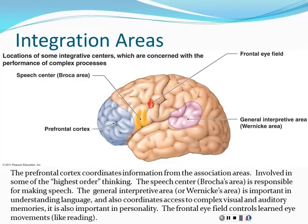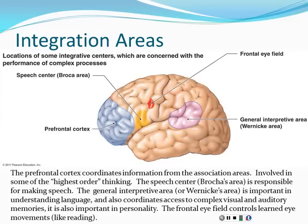Association areas make sense out of things, while integration areas make sense out of that sense — they handle decisions, planning, judgment, and higher-order thinking. We have a large integration area at the front of the frontal lobe called the prefrontal cortex. This area is believed to be responsible for the highest-order thinking we do: critical analysis, planning for future events, and complex cognitive tasks. The prefrontal cortex is essentially what makes us smart.